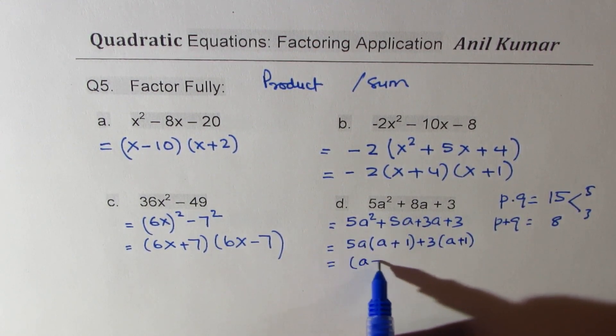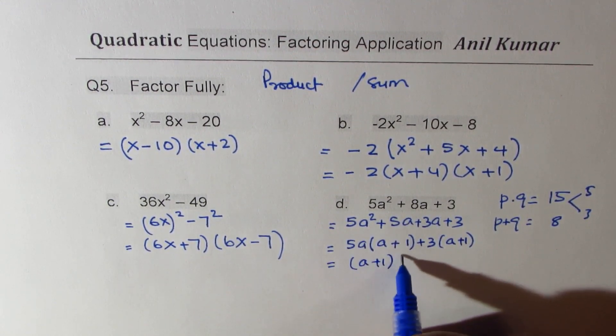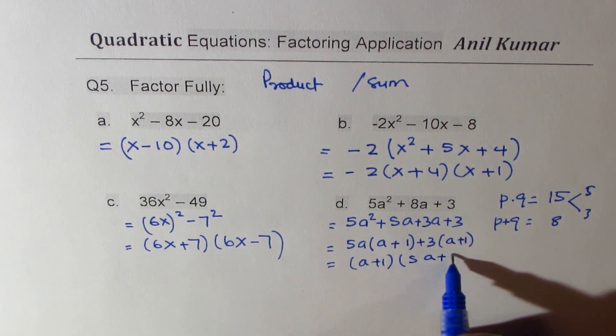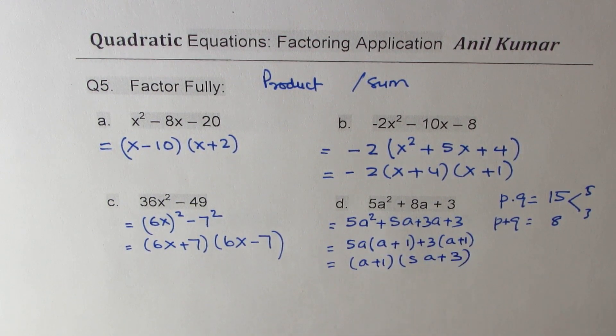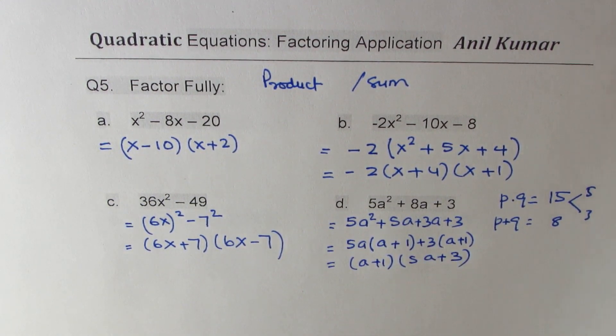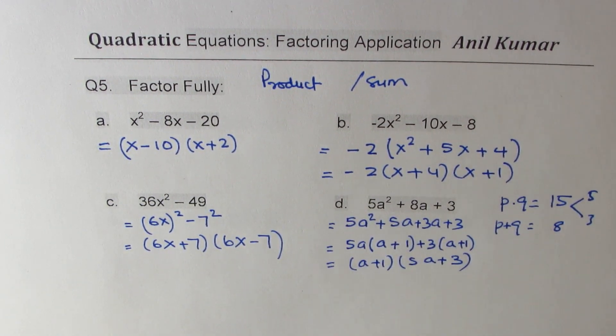Now (a + 1) is common, and we are left with (5a + 3). So the factored form is (a + 1)(5a + 3). Perfect.